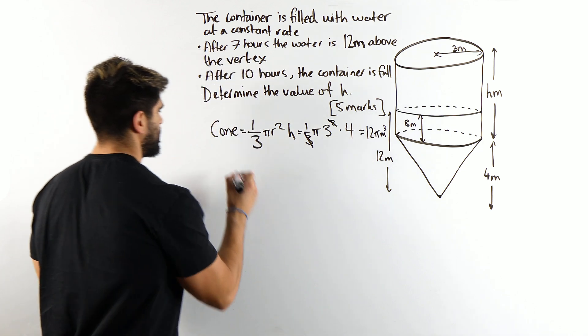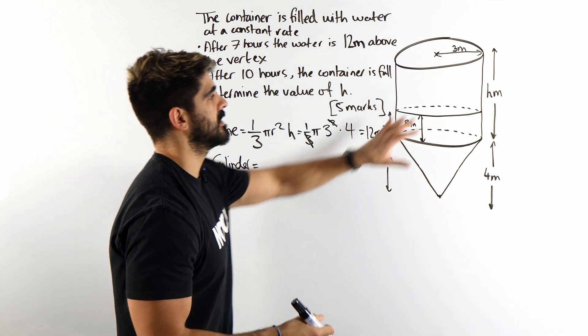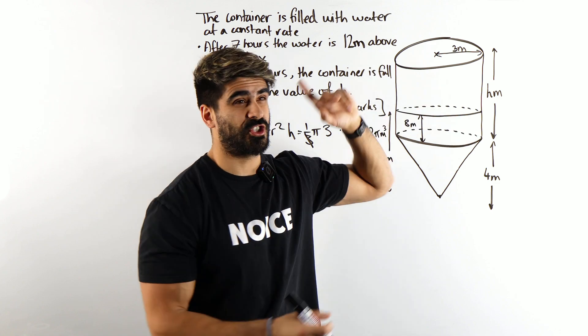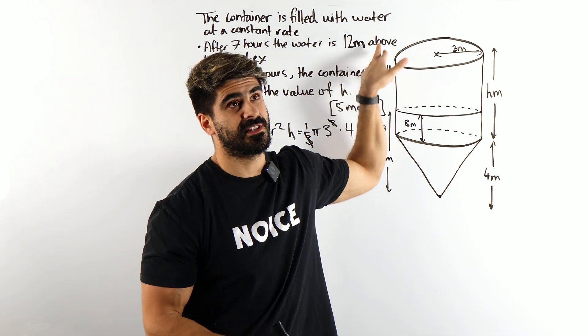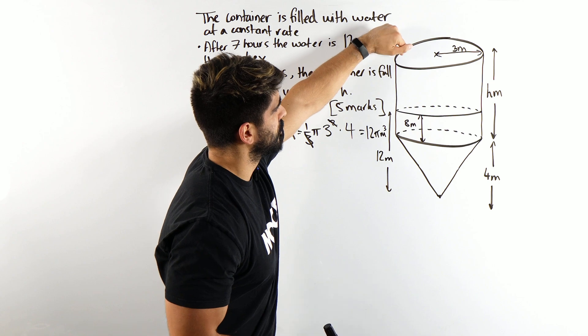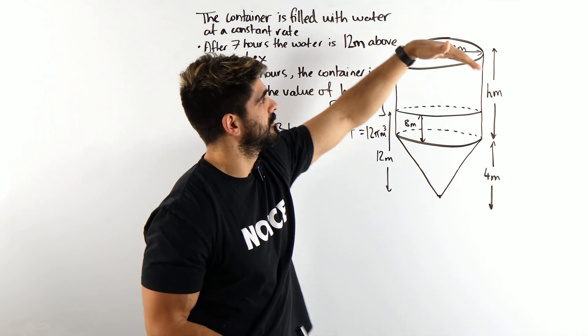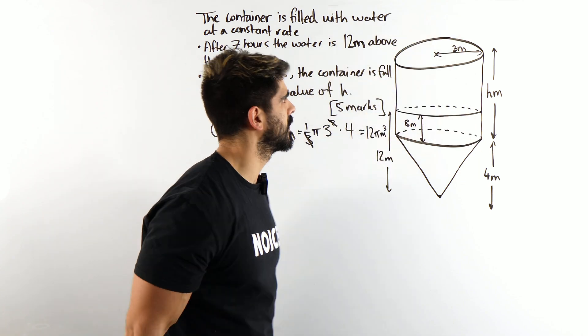Then we're going to do the cylinder. Now the cylinder is a prism. Well, it's actually by definition not a prism. Don't quote me on that because it doesn't have any corners. So it's like a prism, but you do the circle times the height. It's a uniform shape. So it's pi r squared times the height.